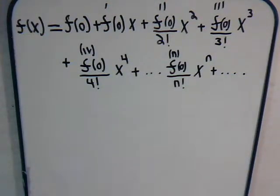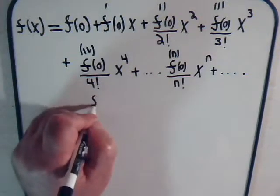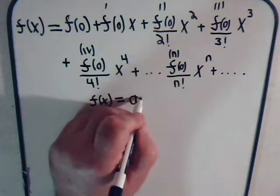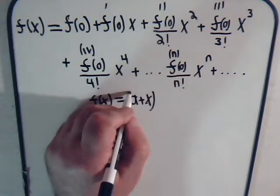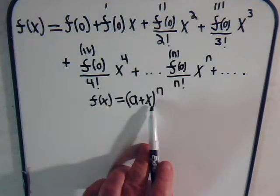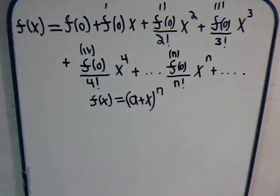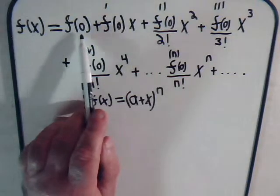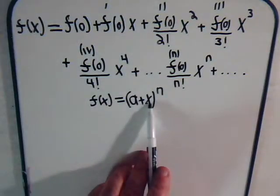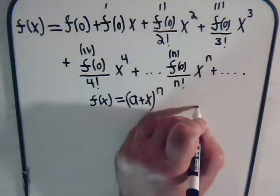Now suppose f of x equals a plus x to the n. If we try to express this as a power series, the first term is the function evaluated when x is zero. If x is zero, this is just a to the n. So f of zero equals a to the n.